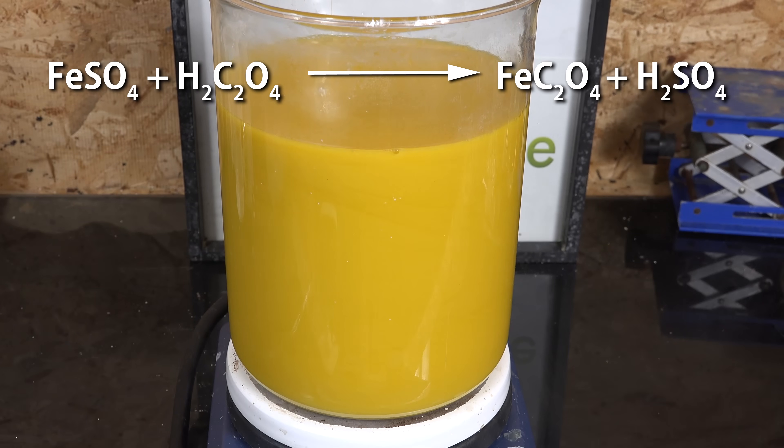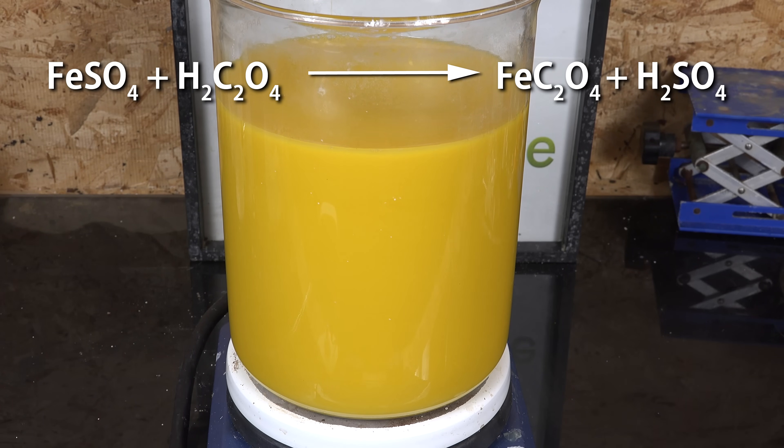Oxalic acid is a much weaker acid than sulfuric acid, and usually if you react a weak acid salt with a strong acid, you make the weak acid and the strong acid salt. And if you react a strong acid salt with a weak acid, like we are here, usually nothing happens.